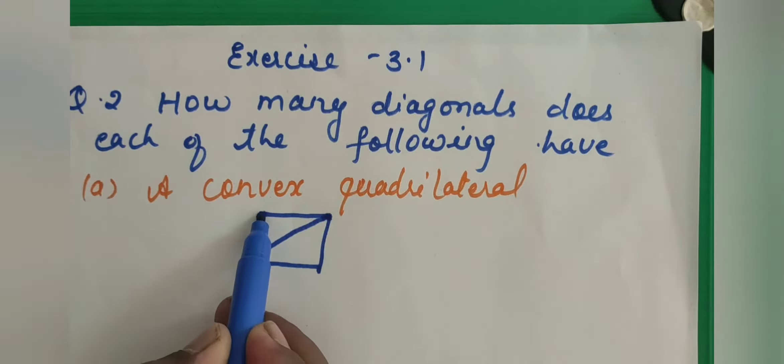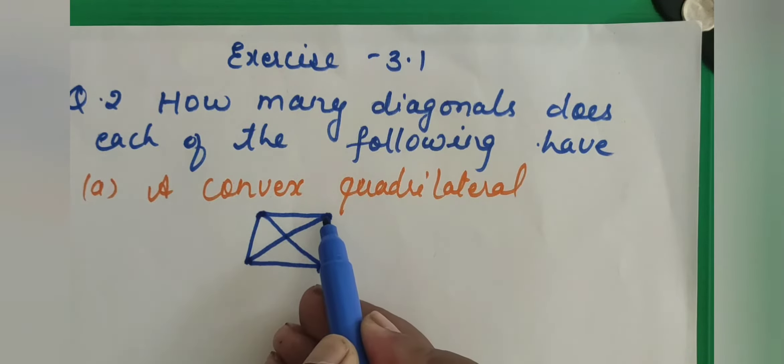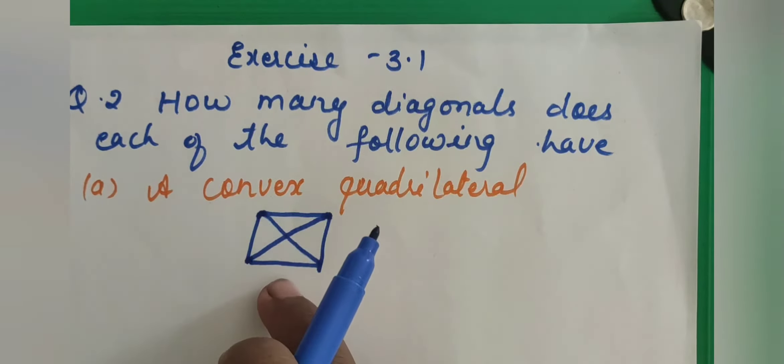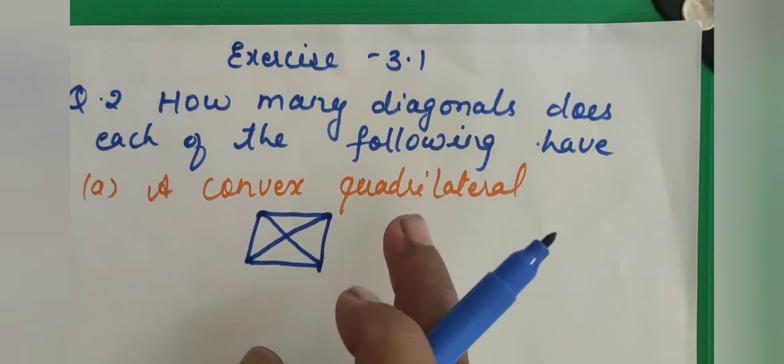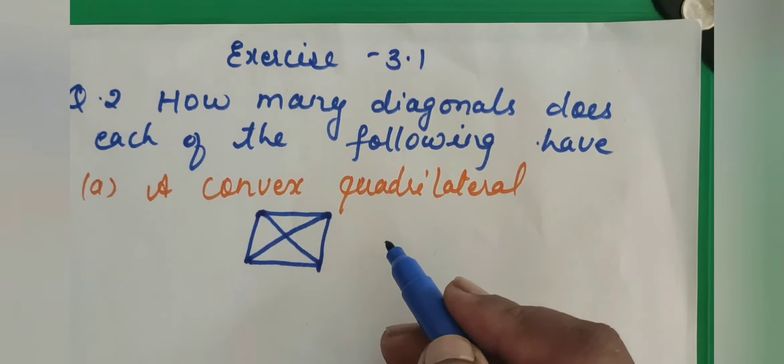Here, this and this are consecutive vertices, this and this are consecutive vertices. But the diagonal is the line segment joining the 2 non-consecutive vertices. So here we have found there are 2 diagonals in a quadrilateral, but there is a formula also for finding out the diagonal.